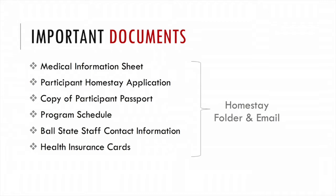Important documents you will receive in the homestay folder and personal email include: the medical information sheet that lists allergies, prescribed medications, and medical history reports; the participant's homestay application; a copy of the participant's passport; the program schedule for daily activities including drop-off and pickup times; Ball State staff contact information available 24/7 in case of emergencies; and health insurance cards. Note that you are not responsible for the $25 copay for office visits or the $75 copay for emergency rooms — these are to be covered by students.